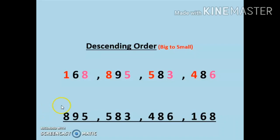While doing descending order, we have to make sure that we always focus on the big number. In ascending order we have to look for the small number; in descending order we have to look at the big number. Descending order refers to numbers which are arranged from big number to small number. We are given four numbers.